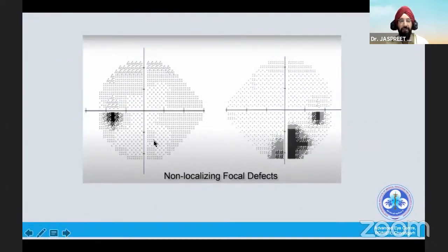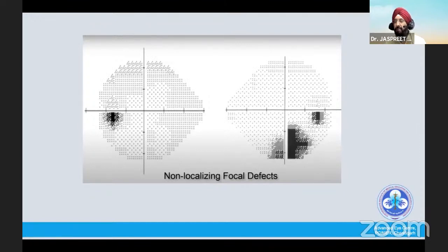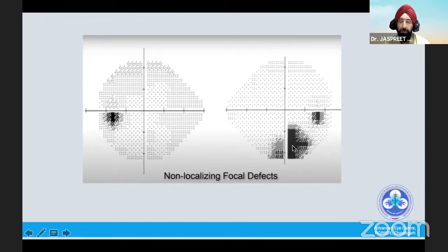Coming to this field effect: here is a blind spot, and this is a lesion in the inferior field — probably just a non-localizing focal defect. This does not follow any pattern of the nerve fiber layer bundle defects, so it really becomes difficult in such cases. When you have neuro-ophthalmic defects, it really follows a pattern. This lesion could be just because of some retinal lesion in the superior part of the retina, superior to the disc. So one has to look at the retina also before interpreting all these fields.